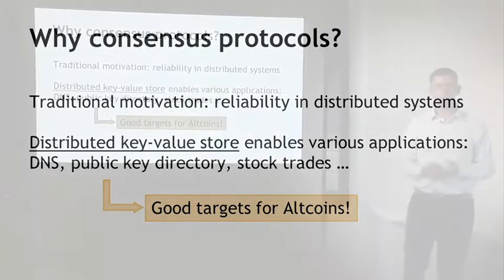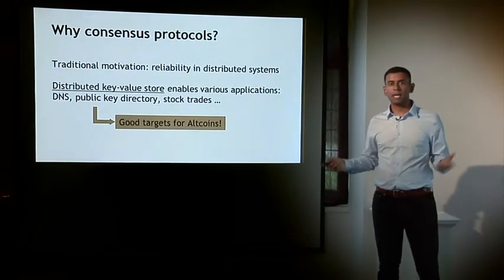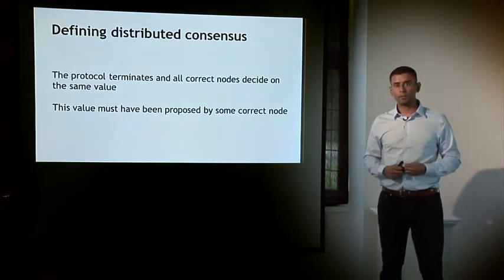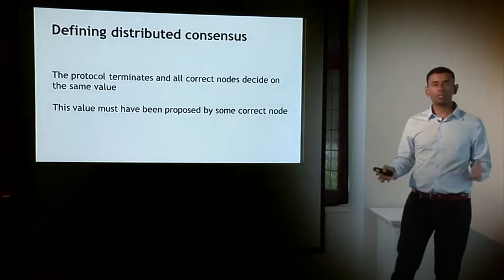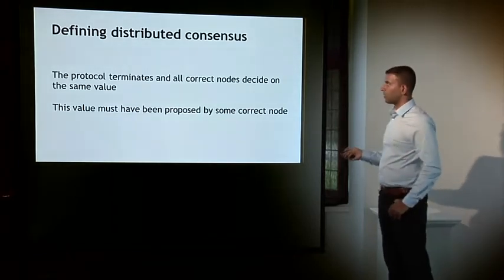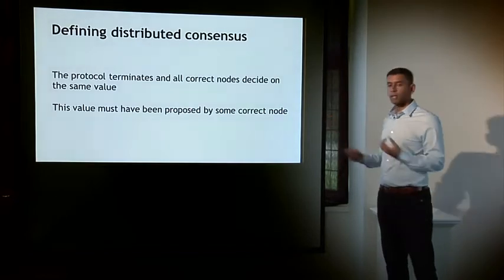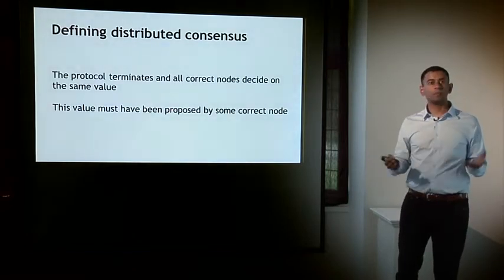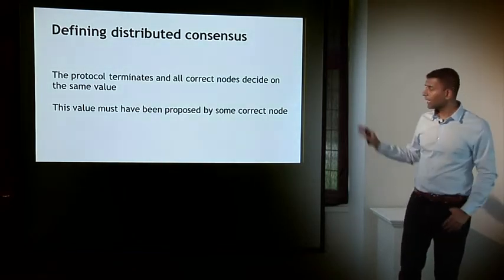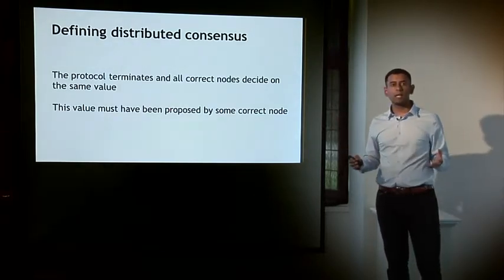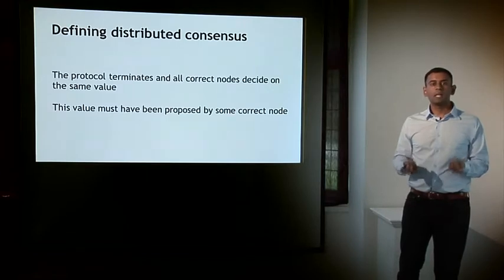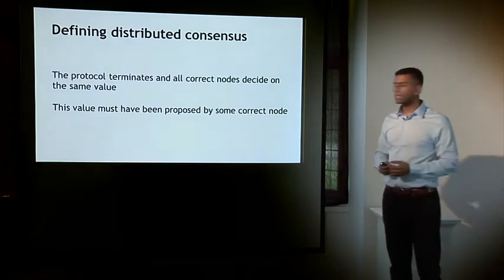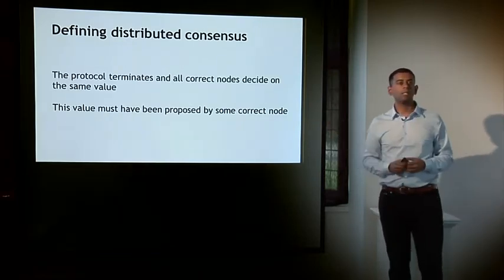The technical definition of distributed consensus is quite simple. Imagine there is a fixed number n of nodes or processes, each with some input value. A consensus protocol runs, and the two requirements are: first, the protocol should terminate and all correct nodes should decide on some consensus value — noting that some nodes might be faulty or malicious; and second, the value they agree upon must have been proposed as input by at least one correct node.